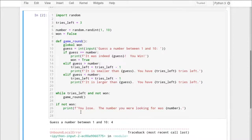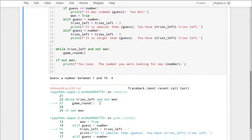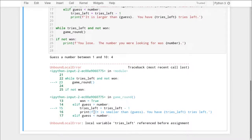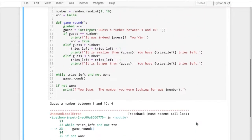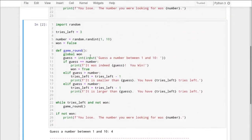This time, I'm going to guess a different number. Okay. We have this error. Unbound local error, local variable, tries left, referenced before assignment. Lots of people get this error, this kind of an error, and they get very confused by it. What does this mean? So, tries left, we created this here.